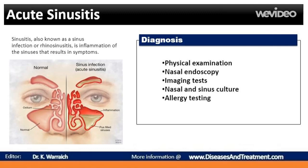Physical examination: Your doctor will feel for tenderness in your nose and face and look inside your nose. Nasal endoscopy: A thin, flexible tube (endoscope) with a fiber optic light inserted through your nose allows your doctor to visually inspect the inside of your sinuses. Imaging studies: A CT scan or MRI can show details of your sinuses and nasal area. While not recommended for uncomplicated acute sinusitis, imaging studies might help identify abnormalities or suspected complications.